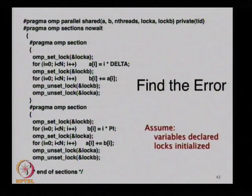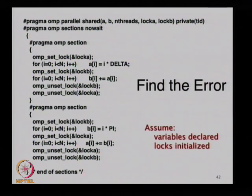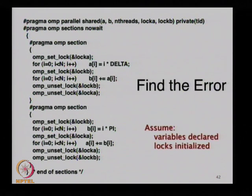We don't know which section we are going to close, so either B gets added to A or A gets added to B. That non-determinism is not necessarily an error — it might be, because I have no idea what these variables mean. But there are some things I can say looking at this code.